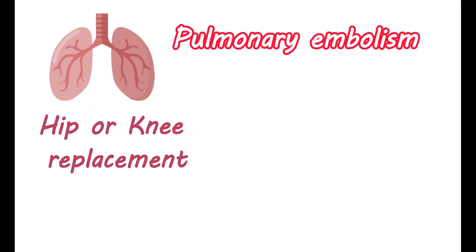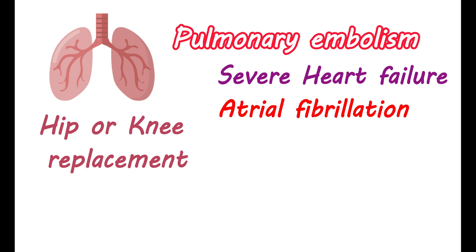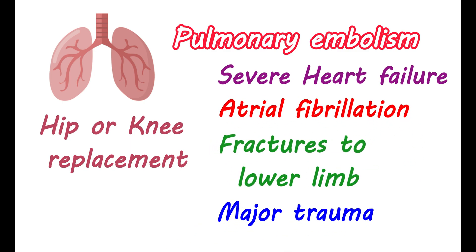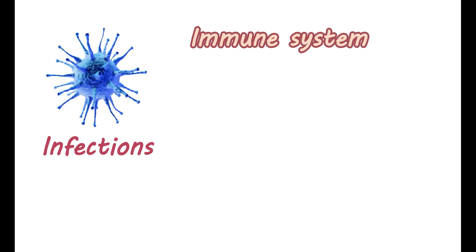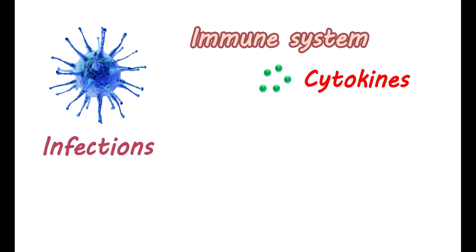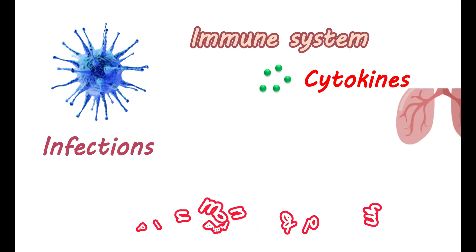Pulmonary embolism risk may also be elevated with surgical procedures like hip or knee replacement, severe heart failure, atrial fibrillation or flutter, fractures to the lower limb, and major trauma. Few infections can stimulate the immune system, resulting in a sudden release of immune mediators like cytokines, which may lead to a serious inflammatory response causing clot formation and pulmonary embolism.